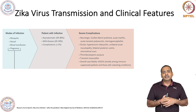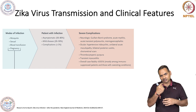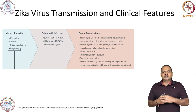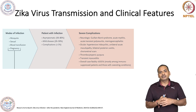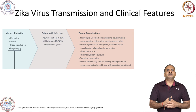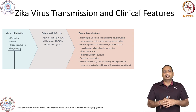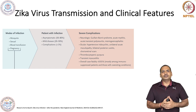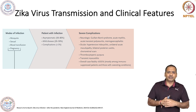Ocular complications include hypertensive iridocyclitis, which is basically inflammation of the iris — the colored part of the eye. There is also unilateral acute maculopathy, bilateral posterior uveitis, and chorioretinal scars. In simple terms, Zika virus affects the eyes and causes inflammation of different components of the eye.